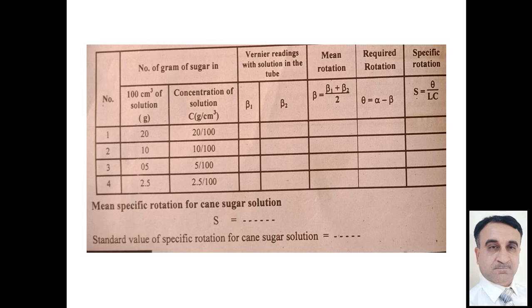We will find beta 1 and beta 2 values. We will find the darkness in the polarimeter tube. We find for distilled water and for sugar solution and we will give difference. Then theta is equal to alpha minus beta.